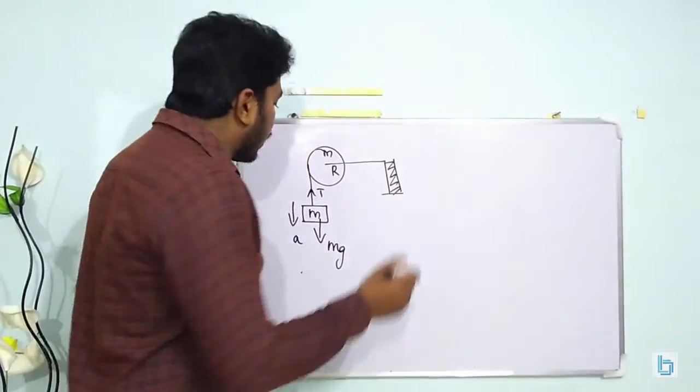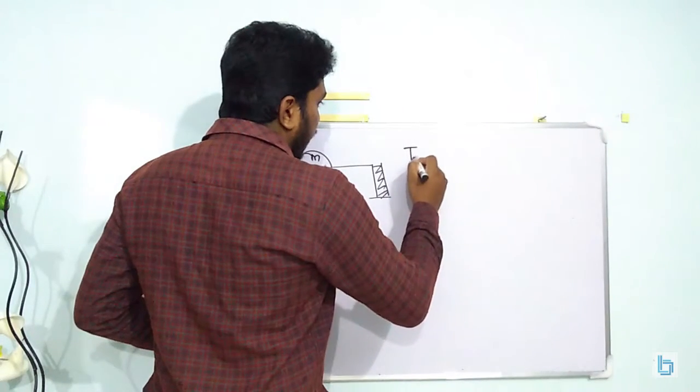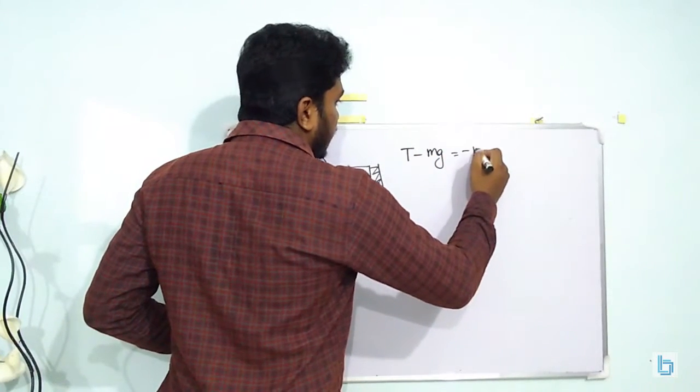So with respect to this block M, I can write the equation as T minus MG is equal to minus MA.